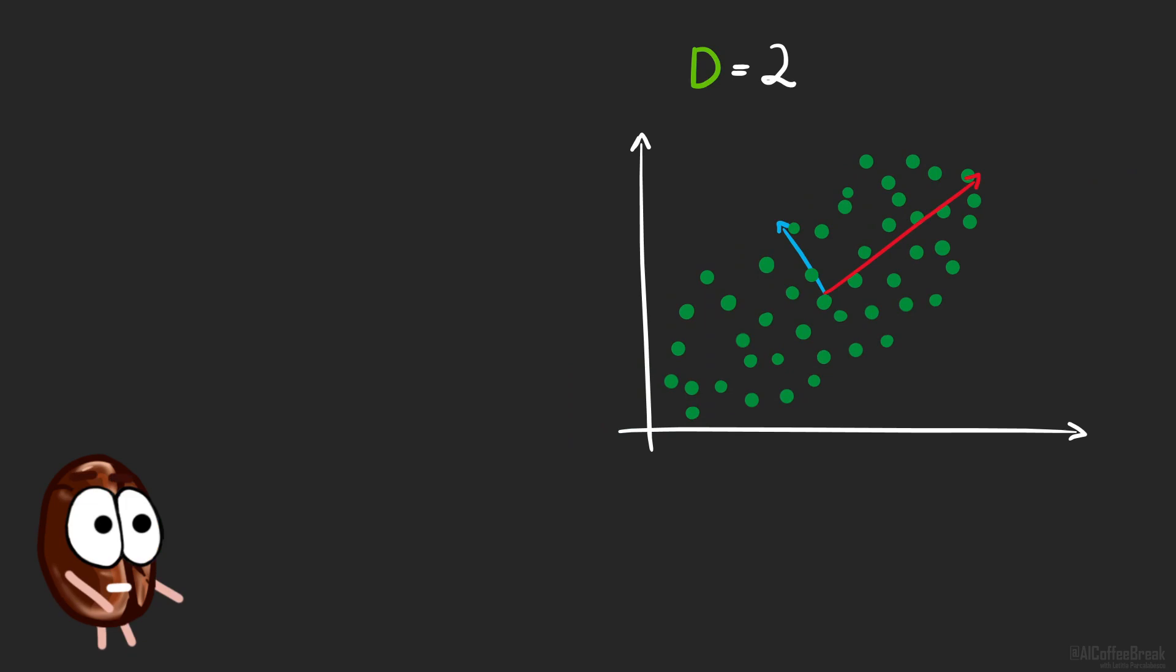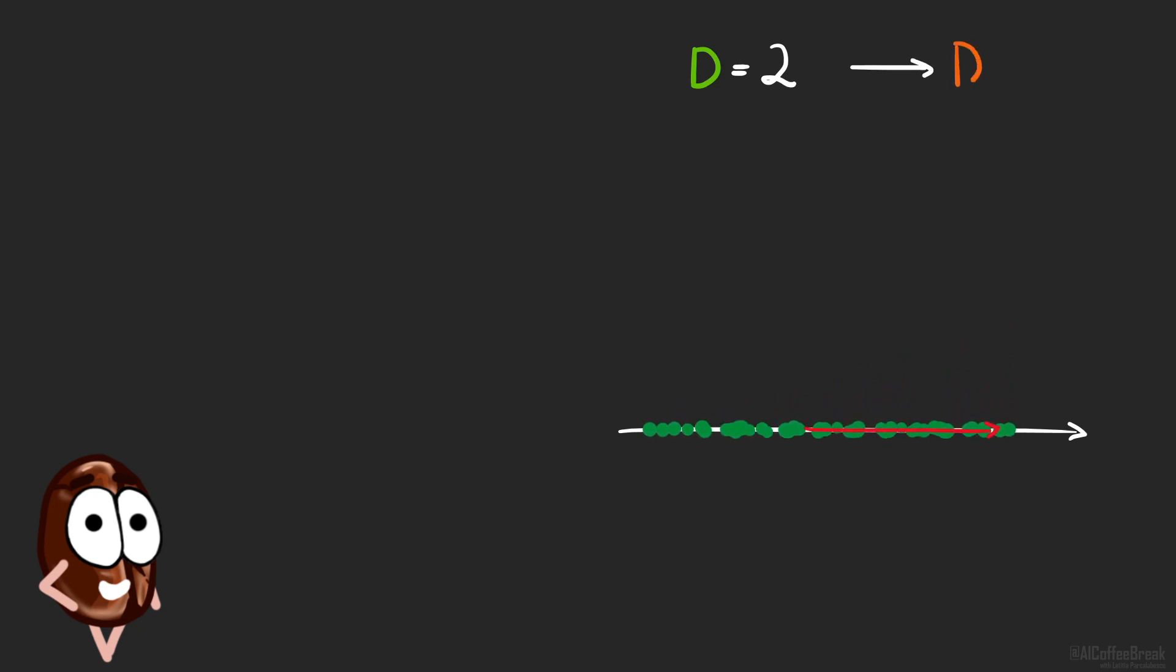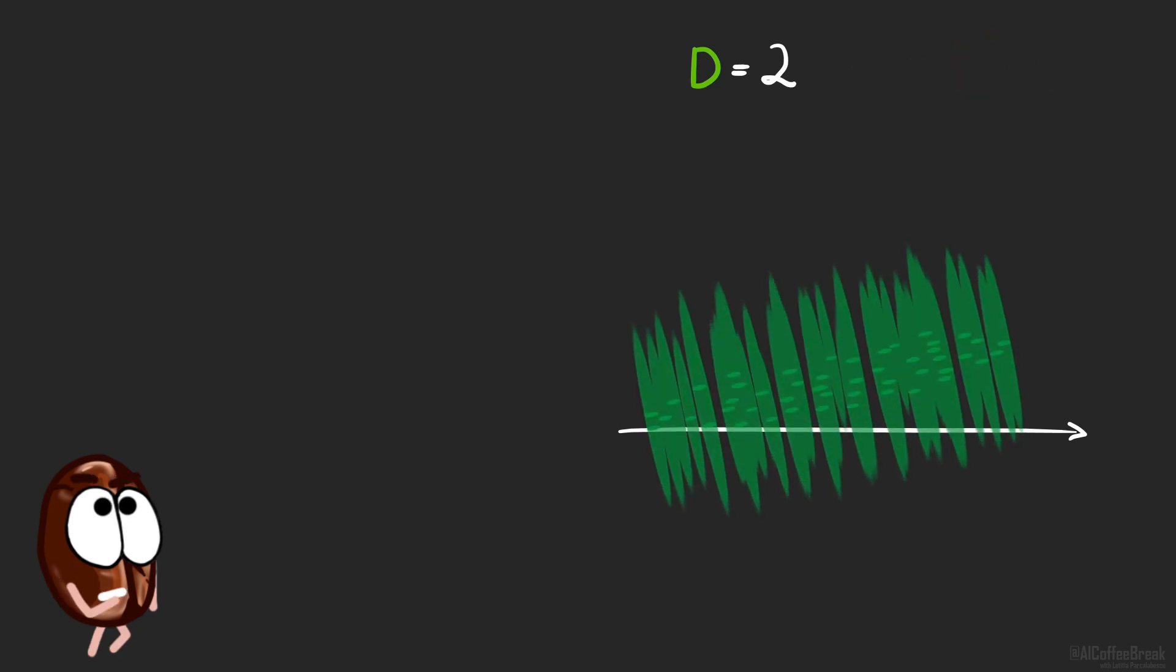So, the main idea of the PCA algorithm is to keep the directions of the biggest spread and throw away the rest until we reach the desired number of dimensions, d prime. But how to do that?